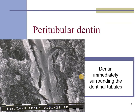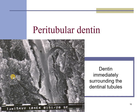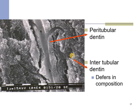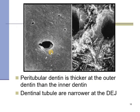Dentine is formed in a rhythmic manner. Right around the odontoblastic process, there is an empty space filled with dentinal fluid. The odontoblasts and the odontoblastic processes produce dentine adjacent to them, which is much more dense — called the peritubular dentine. Between the two tubules, there is a coarser area called the intertubular dentine. The peritubular dentine is much more dense than the intertubular dentine.